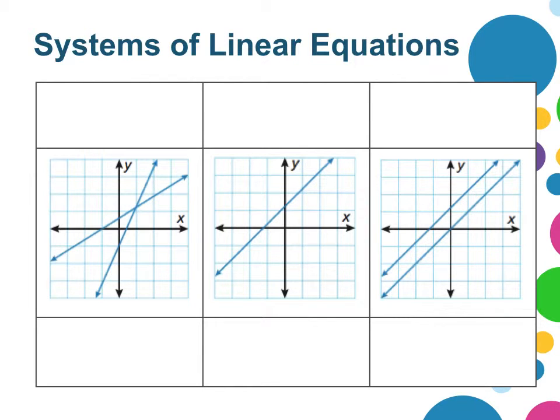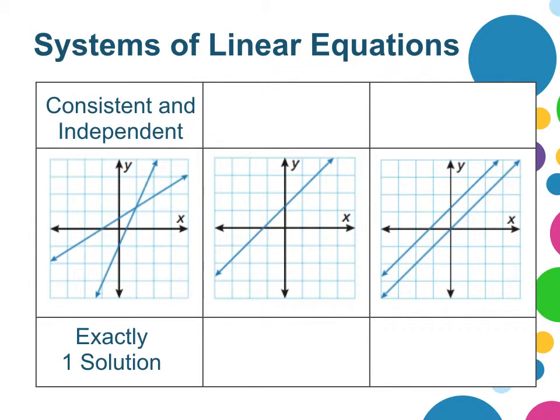In the first example, we have two linear equations that intersect at a point. So these equations are not parallel, and they are not the same line. We call this consistent and independent.